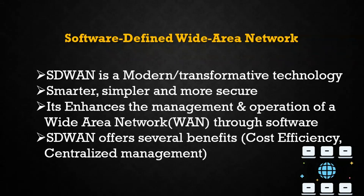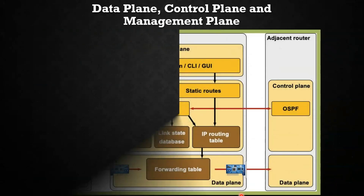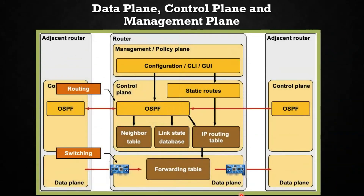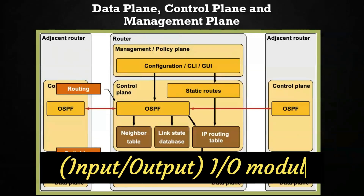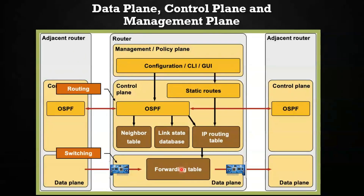SD-WAN achieves this by separating the network hardware from what we call the data, control, and management planes. Before going technically into SD-WAN, let's understand these planes. A detailed video on management and control plane is already available in our channel — the link will be given in the description. The data plane, also known as the forwarding plane, is responsible for actually forwarding the network traffic. It receives instructions from the control plane on how to forward traffic from one device to another.